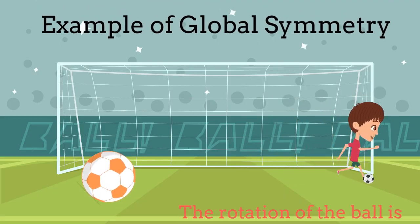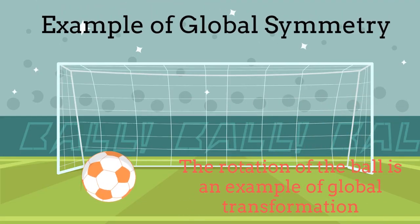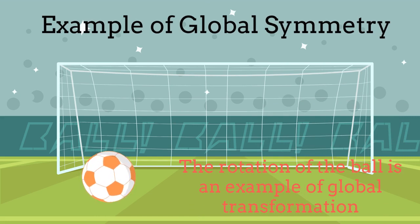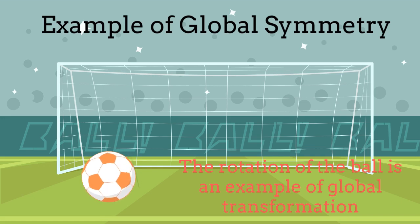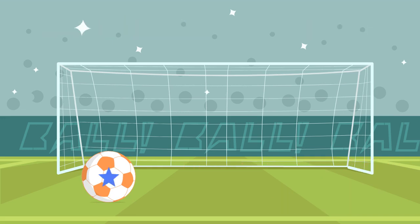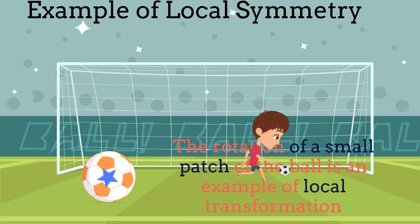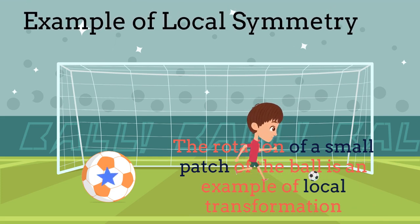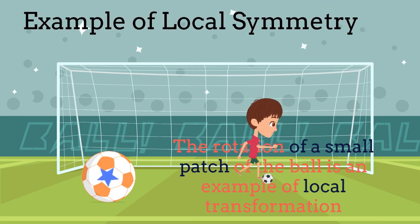One example of a global symmetry transformation is the rotation of a ball around its central axis. From the perspective of the ball, the rotation is global because all the points belonging to it move simultaneously around the center. On the other hand, one example of a local transformation would occur if we take the same ball and just rotate one small portion of it.